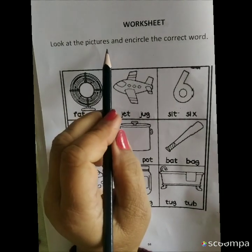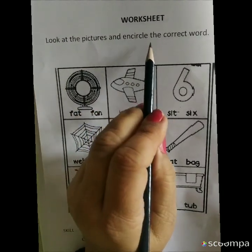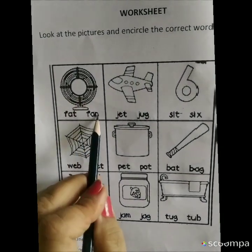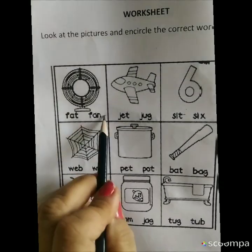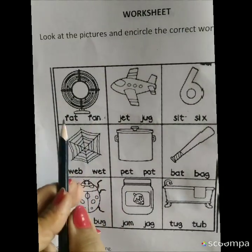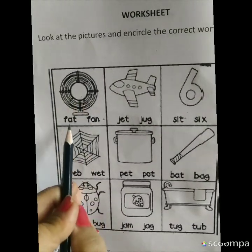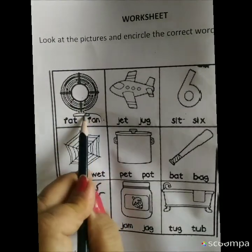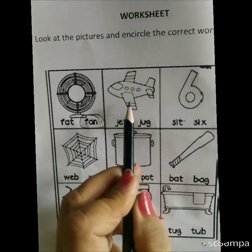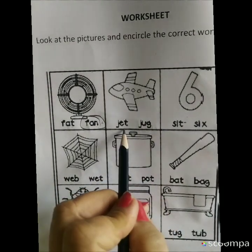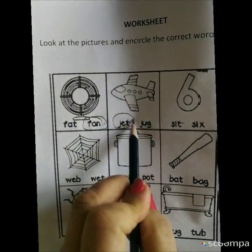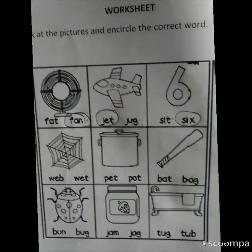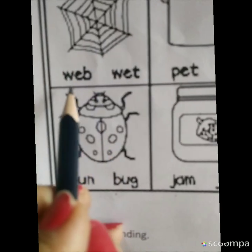Look at the pictures and encircle the correct word. Here are two words given. Here this is fan, and this is fact and fan, this is match with fan so we will circle it. This is jet. Jug and jet, circle the jet. This is six. Sit and six, circle the six.